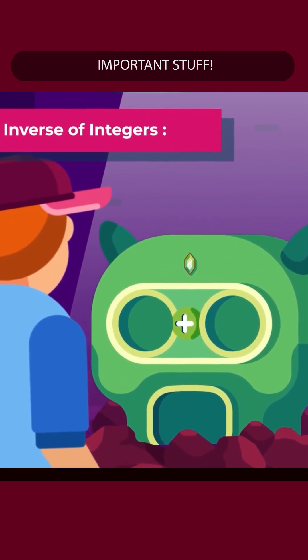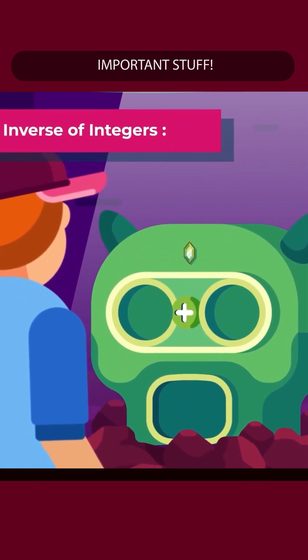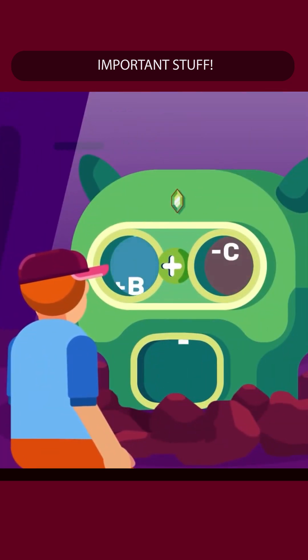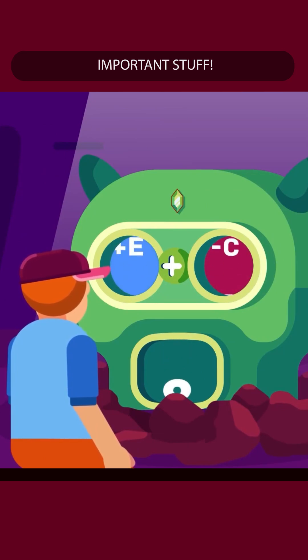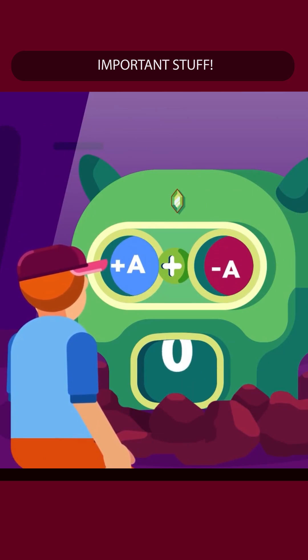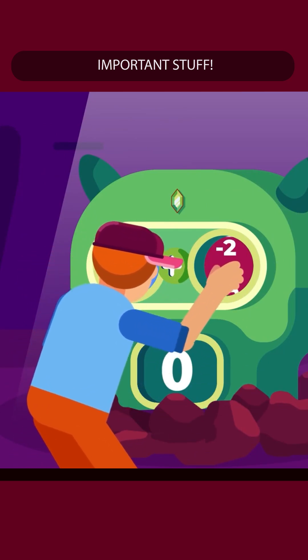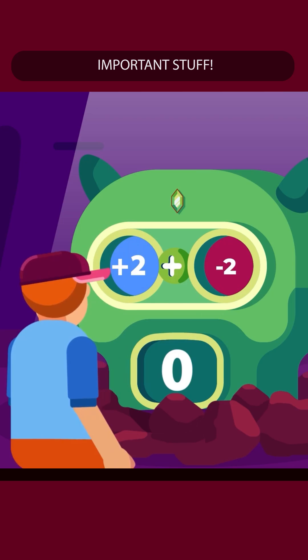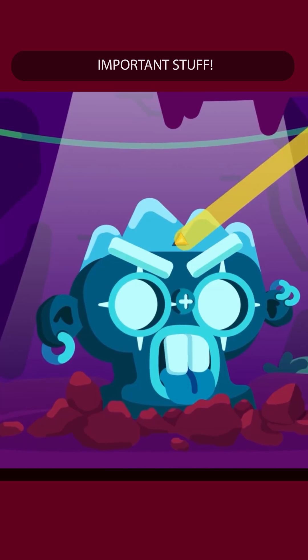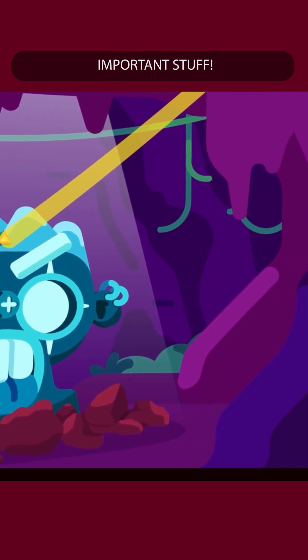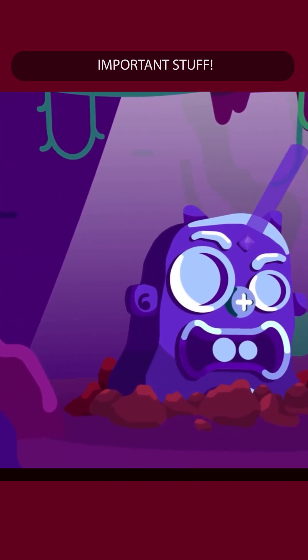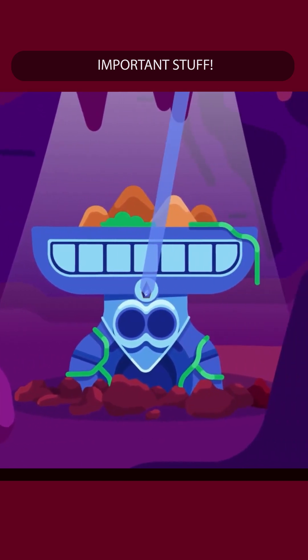Number 6: Additive inverse of integers. For every integer, there exists an integer such that their sum is 0. For example, 2 plus minus 2 equals 0. Additionally, the sum of any integers will always yield integers, never appearing as decimals or fractions.